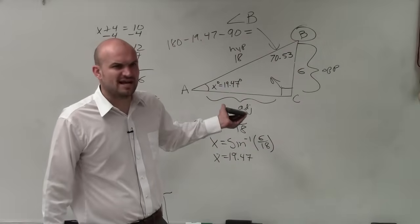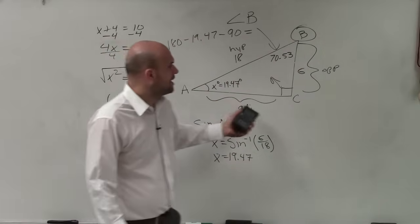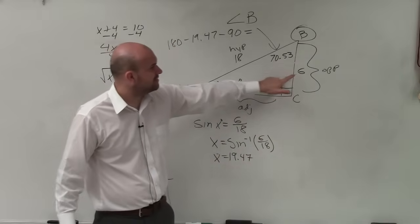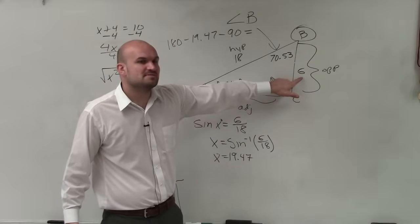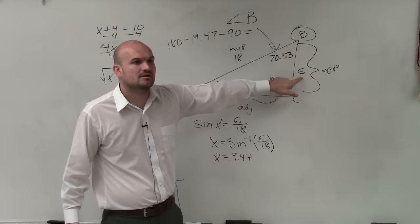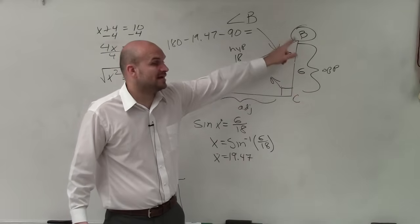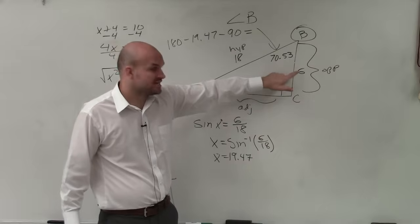Why go through all this to find x? What if I just want to find B directly? Well, what information do I have? 6. Is that 6 my opposite side or my adjacent side, Robert? For angle B. For angle B, you're adjacent. And what is 18? Is that my hypotenuse or my opposite? Hypotenuse. It's always your hypotenuse, right?